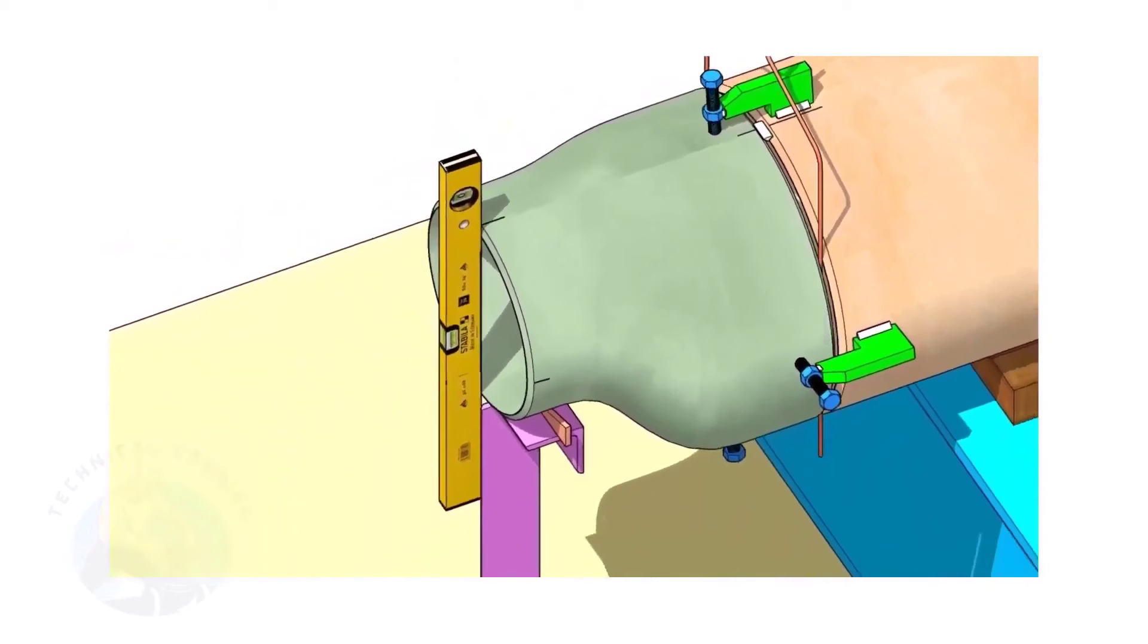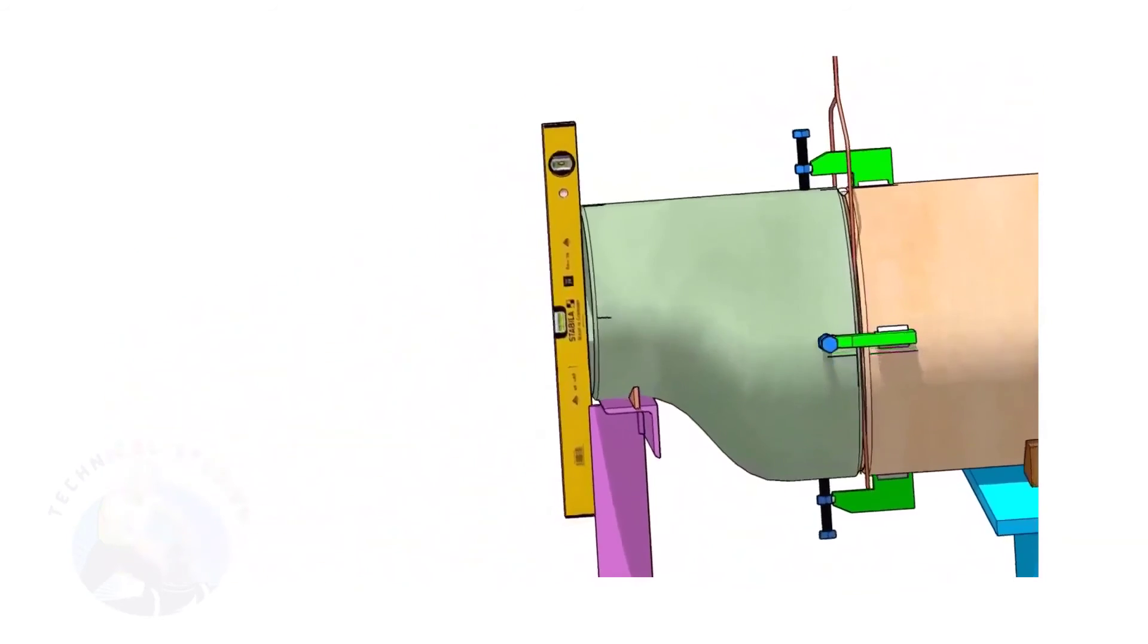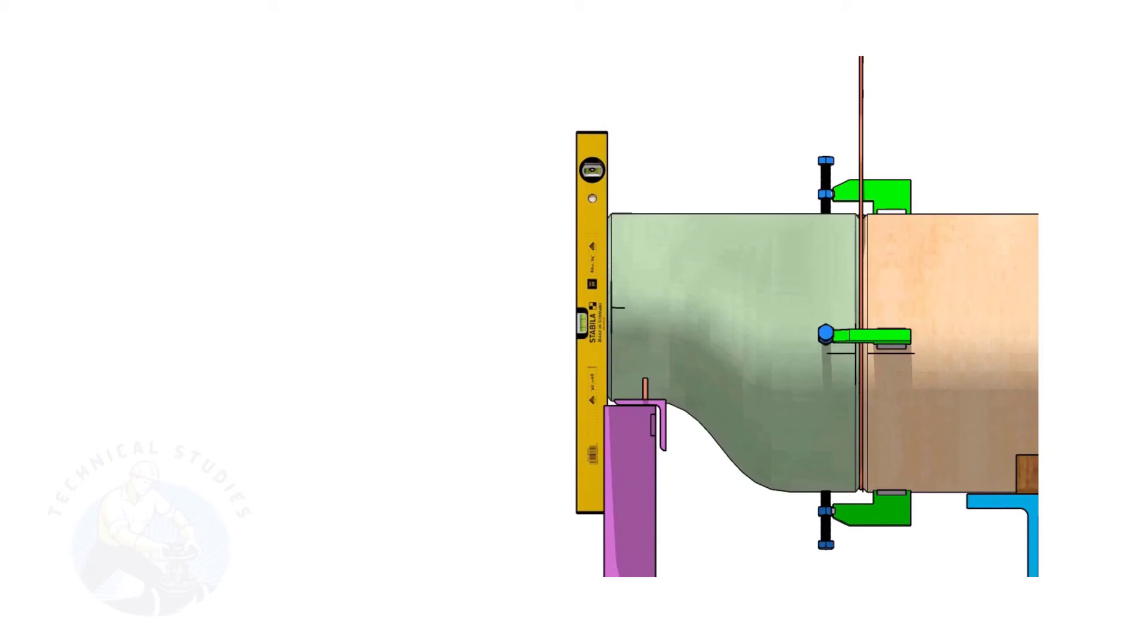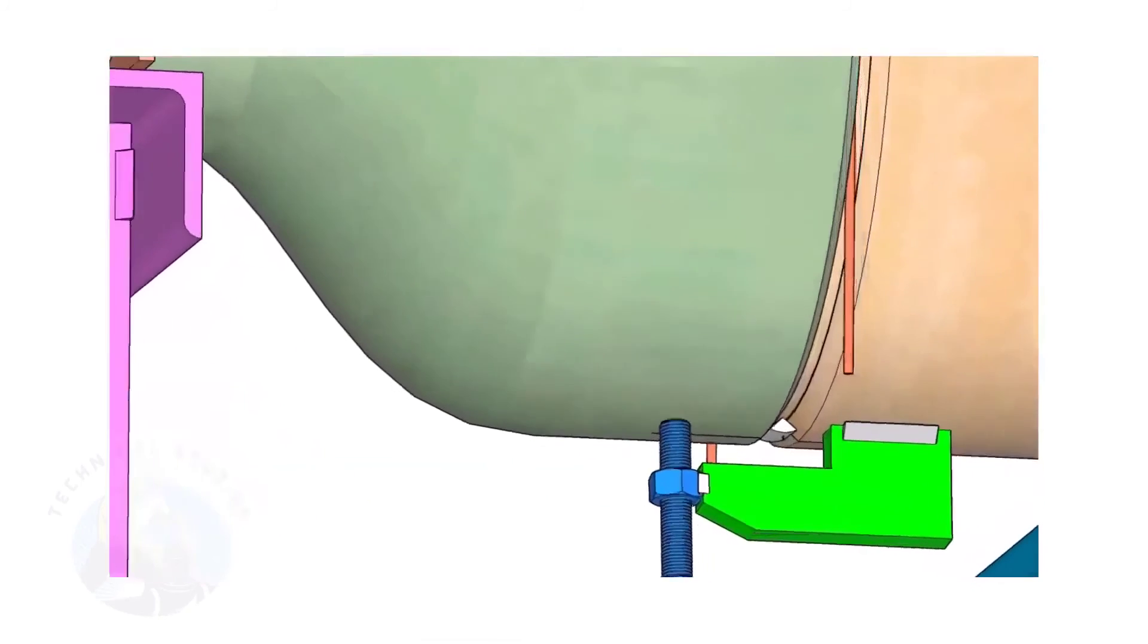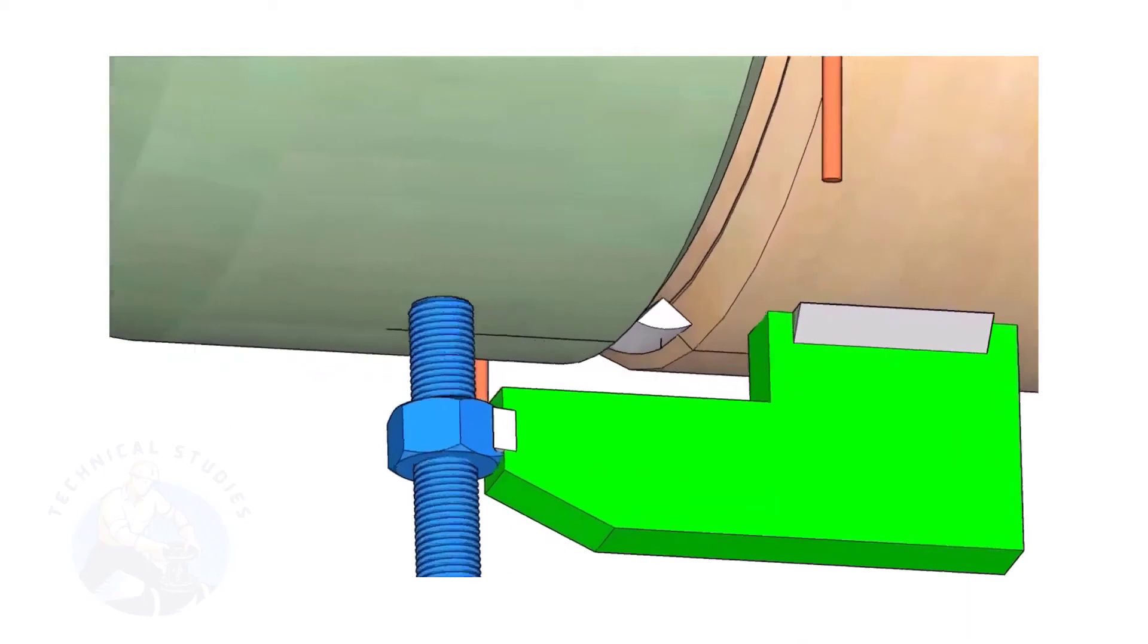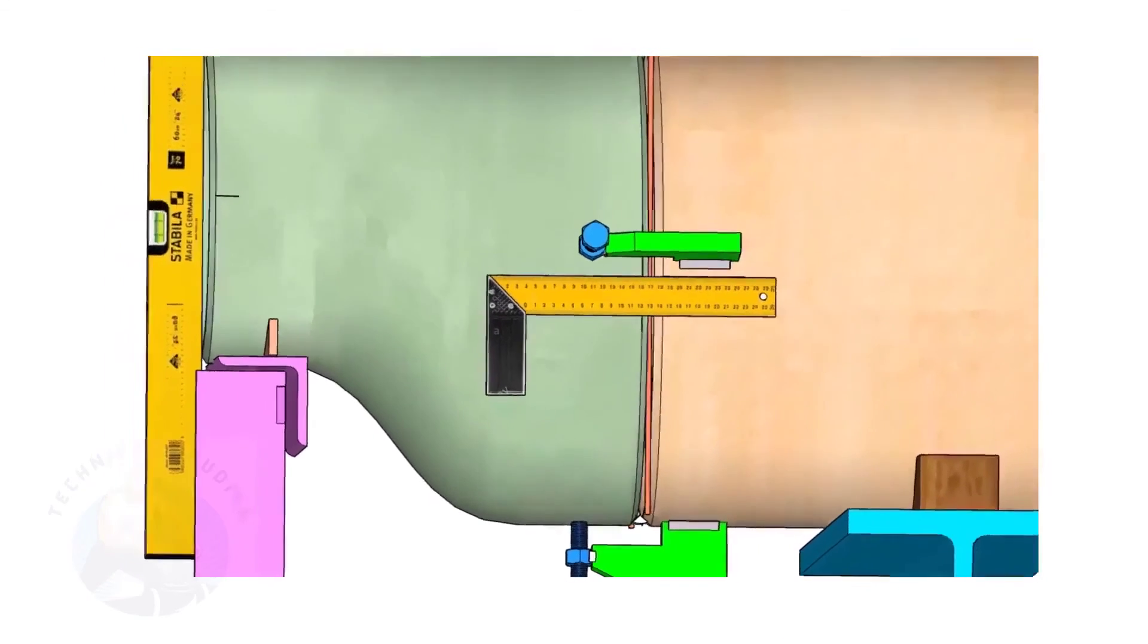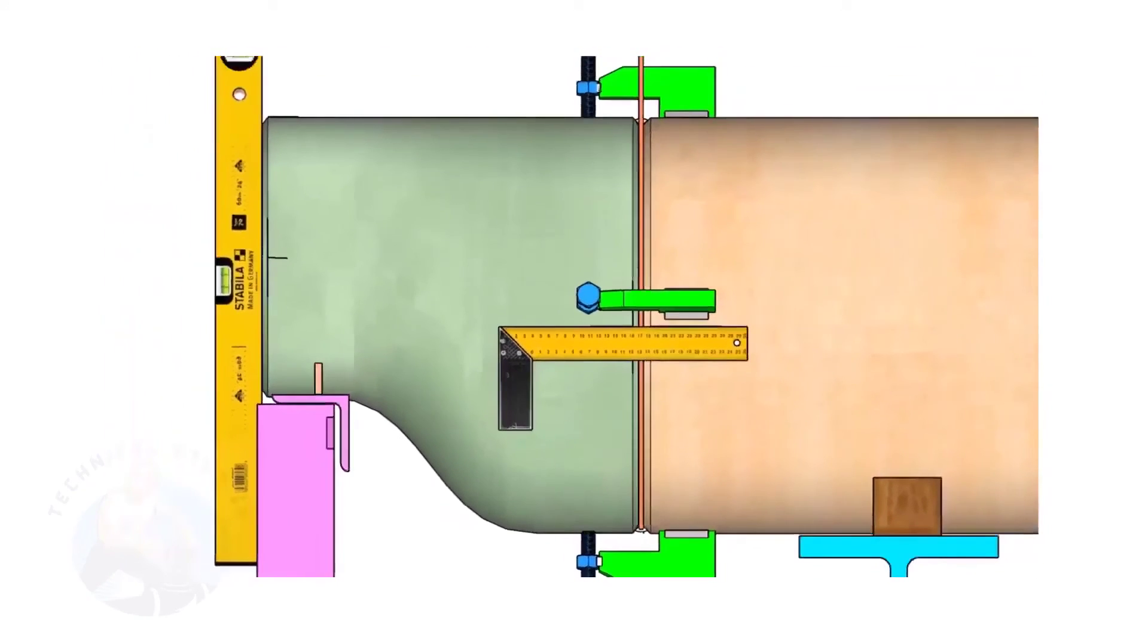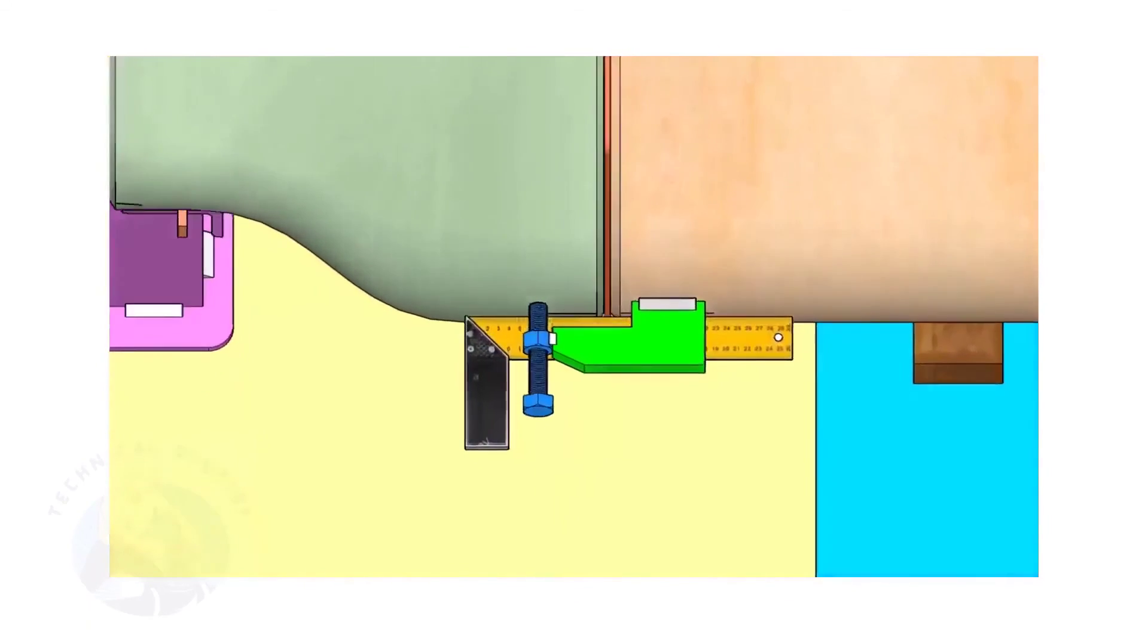Correct the levelness of the outer face of the reducer. Tack weld on both sides.